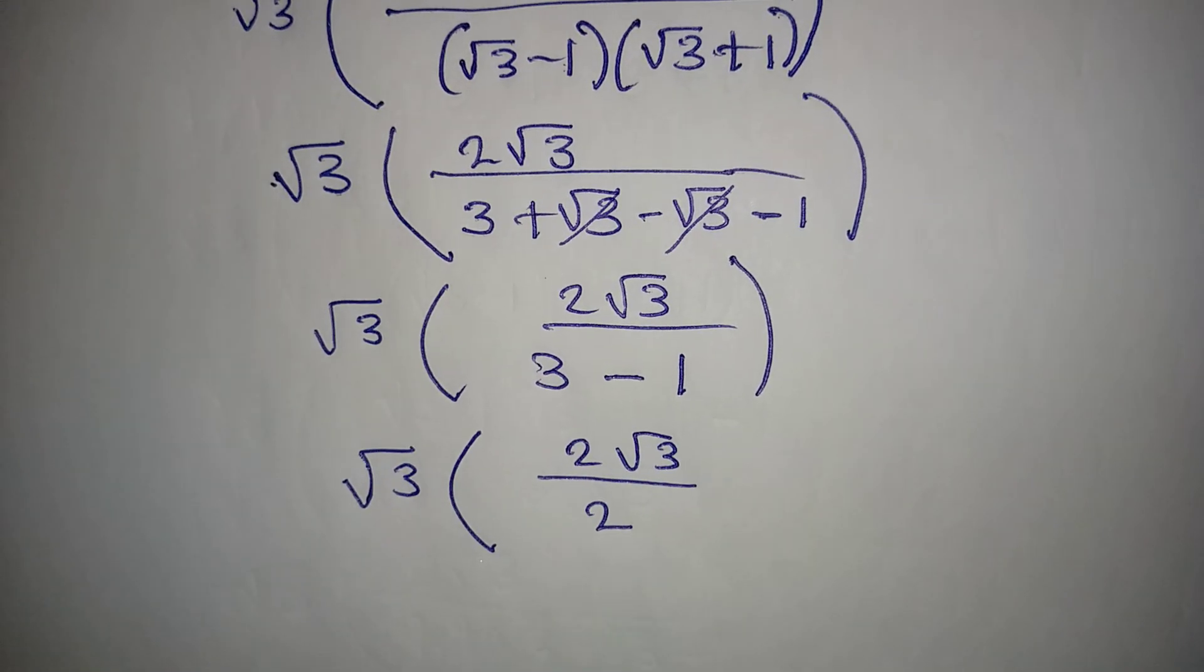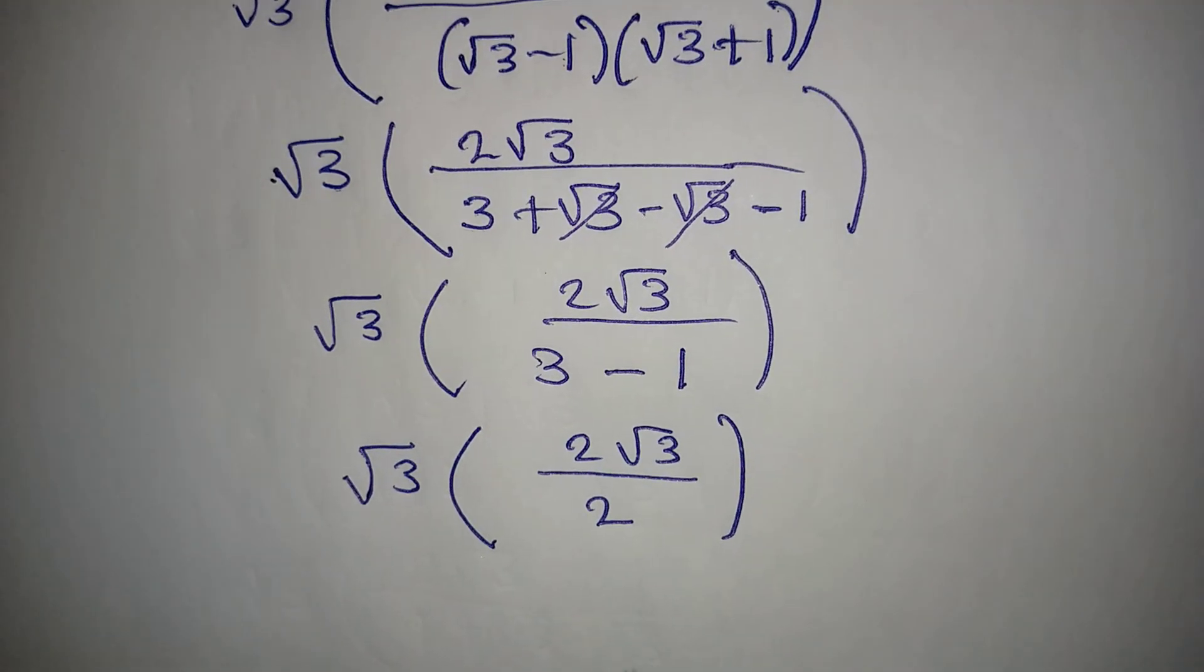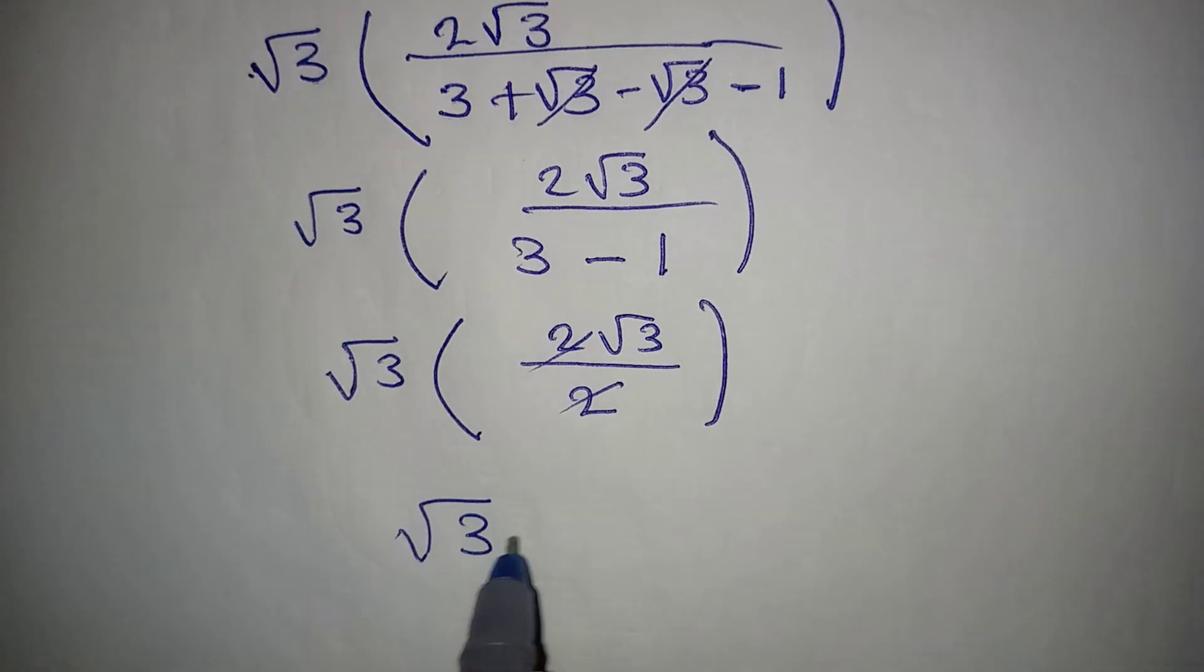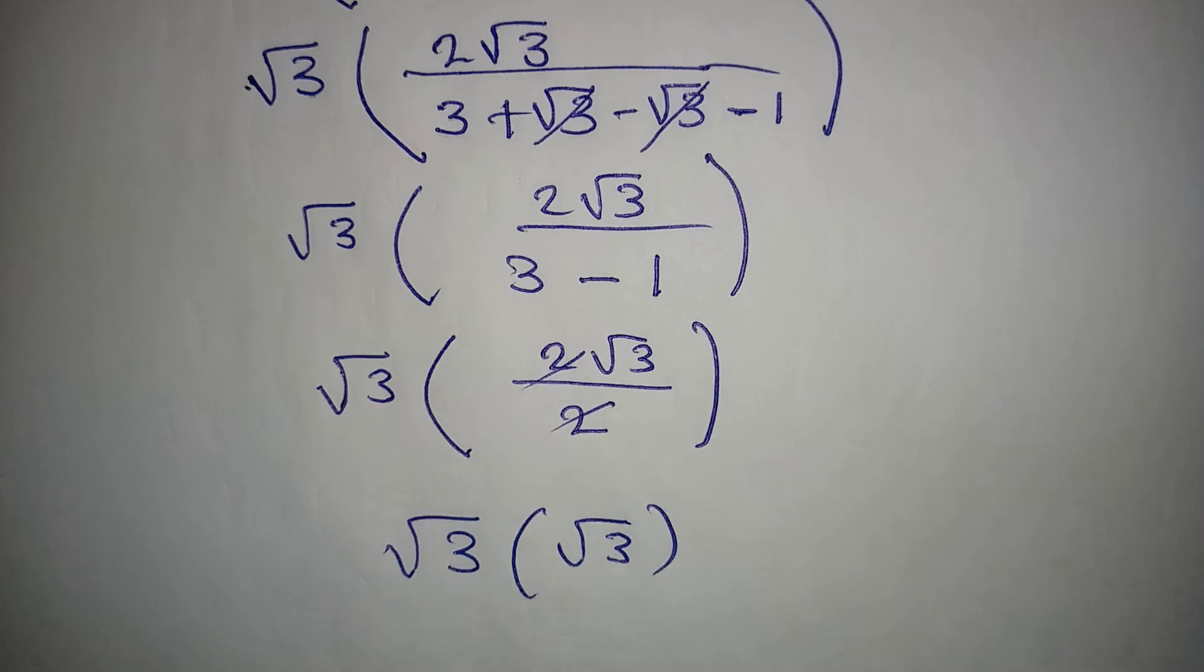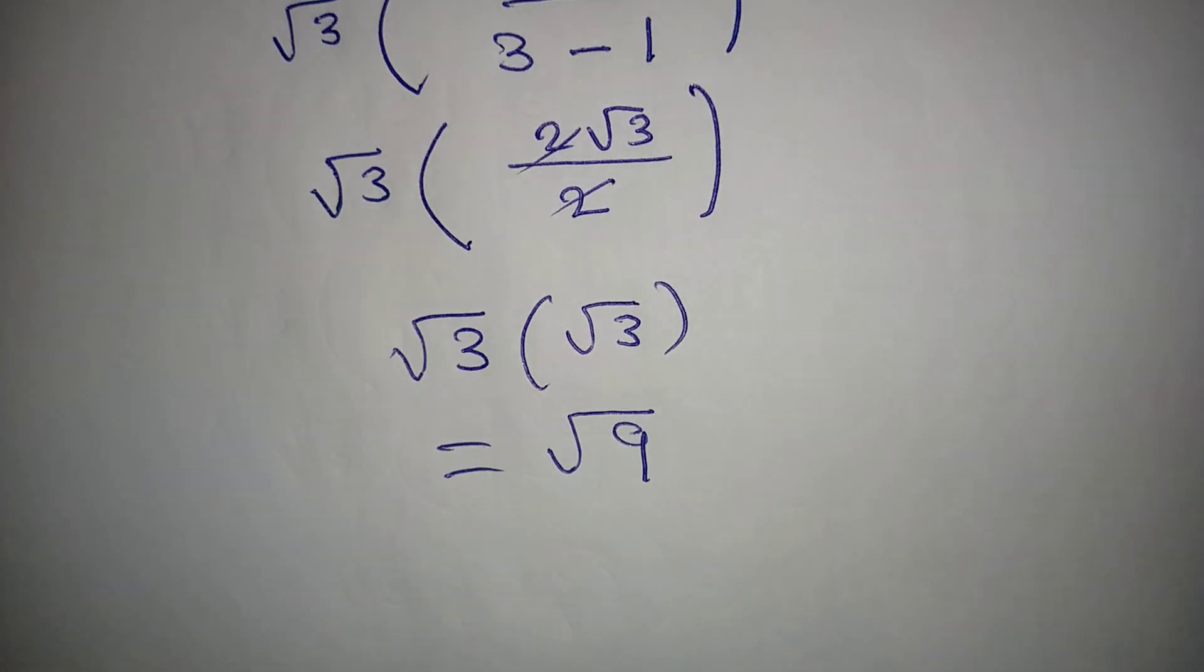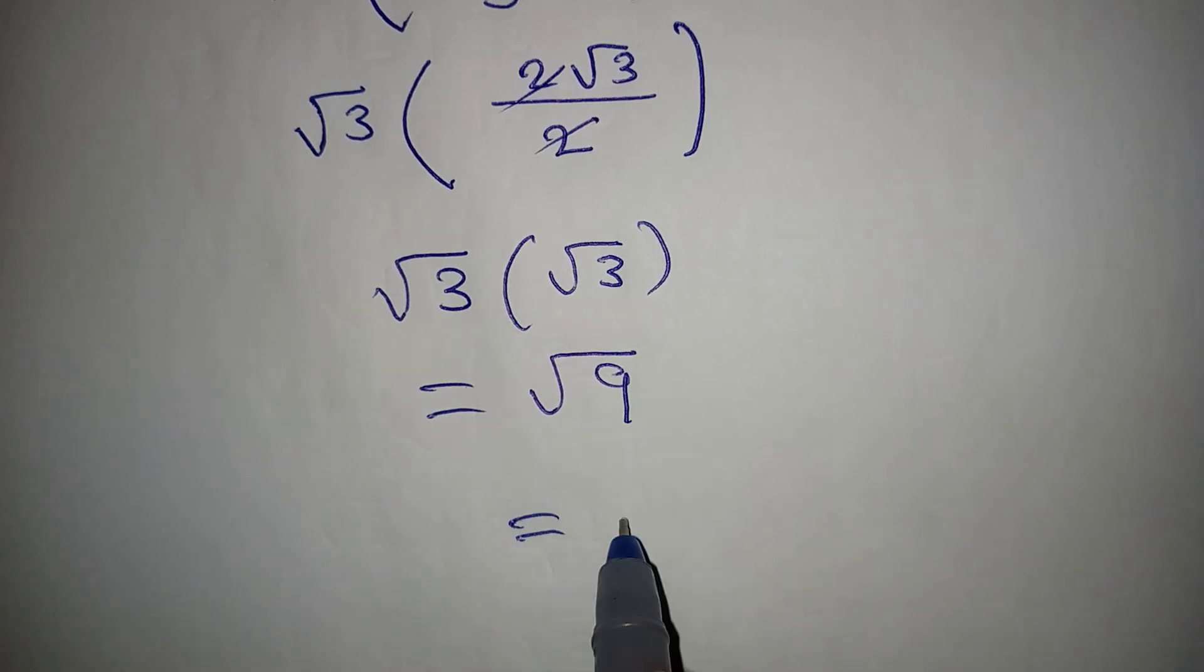Now this will just go with this, and then we have root 3 times root 3, and this is going to give us root 9, and 9 is a perfect square which will give us 3.